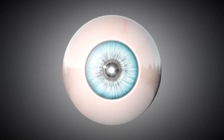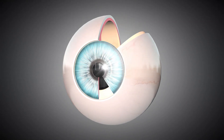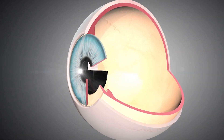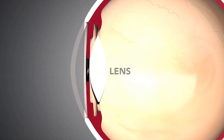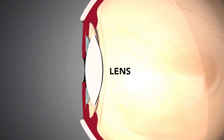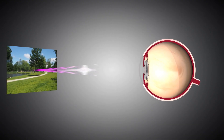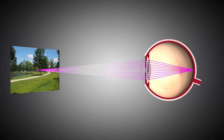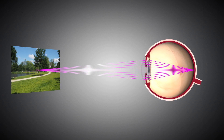A cataract is the clouding of the natural lens inside the eye. When we're born, the lens inside of our eye is clear. The lens is located right behind the iris, or the colored part of the eye. As light enters the eye, the lens brings it into focus on the back of the eye, the retina, in order to form a clear image so that we can see.